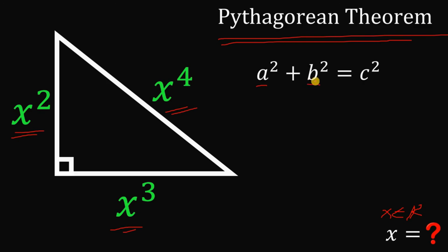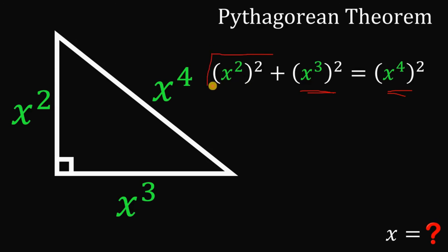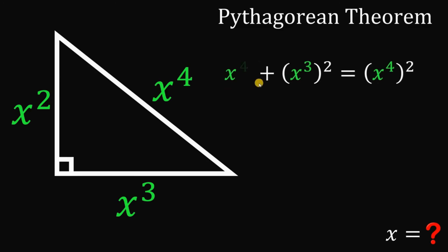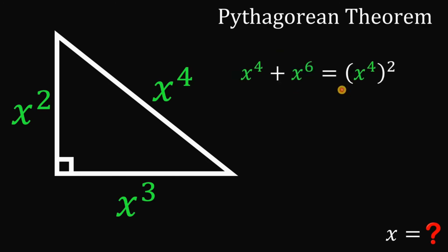Here, a and b are the legs of the right triangle, and c is the hypotenuse. Applying the Pythagorean theorem, we get x squared raised to the power of 2, plus x cubed raised to the power of 2, equals x to the fourth power raised to the power of 2. Simplifying: x⁴ plus x⁶ equals x⁸.